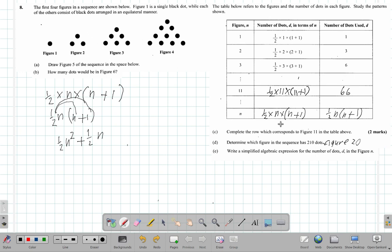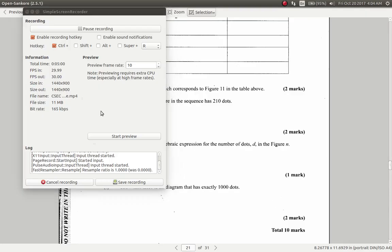That's what I'm going to do. That is what I have here: half n(n plus 1) will give you the number of dots. If I remove all of these multiplication signs, that is what I have here. So that's part E of question 8.